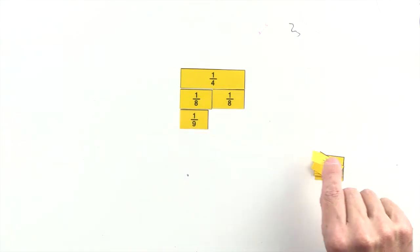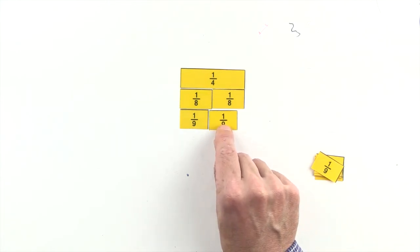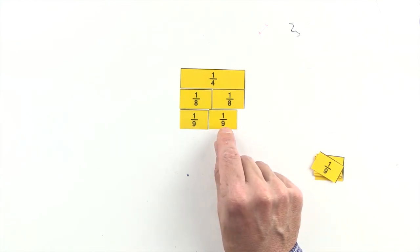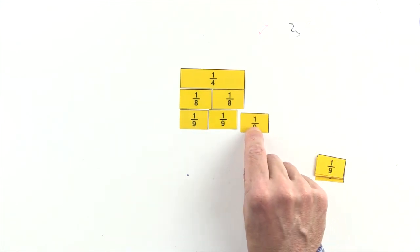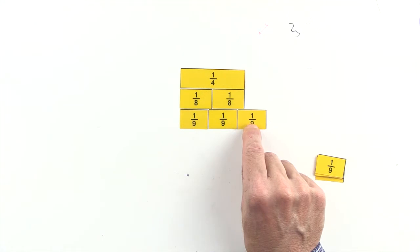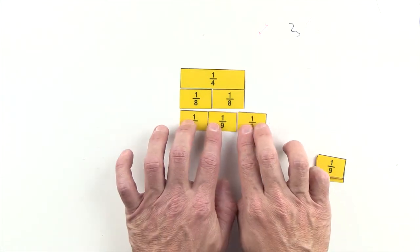One ninth and two ninths are less than one quarter, and three ninths are greater than one quarter, so we can't use ninths to make an equivalent fraction to one quarter.